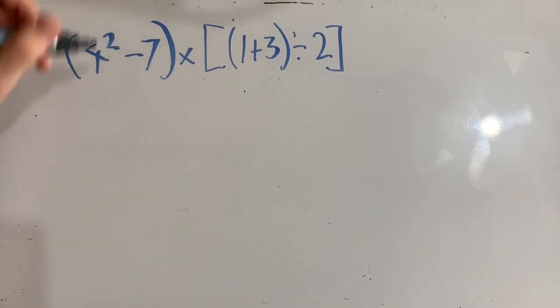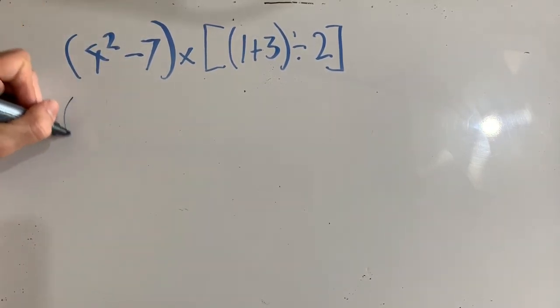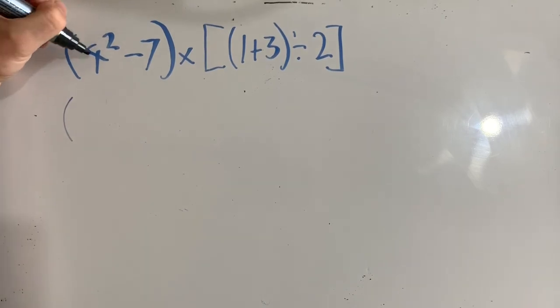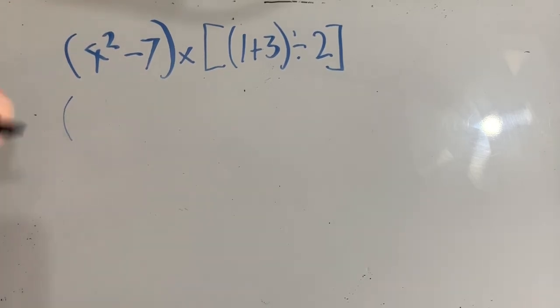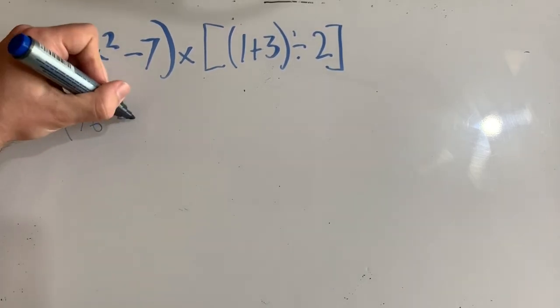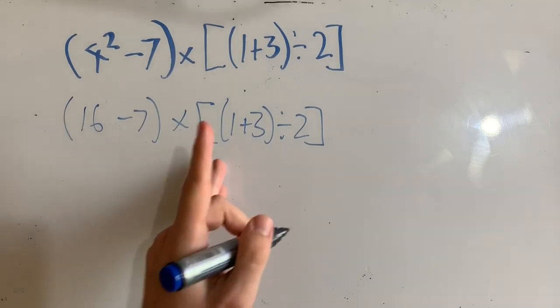So first, I'm going to look at this one here. So on our next line, I'm going to solve this one. I need to work out what this index is. That's part of solving this bracket. So I'm going to go 4 to the power of 2 is 4 times 4, which is 16 minus 7 times this here.